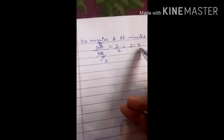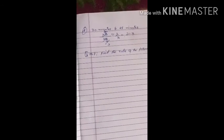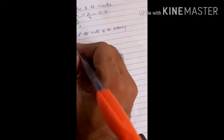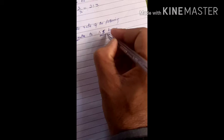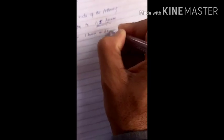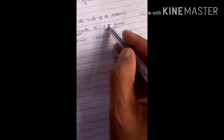After this, question number 7: find the ratio of the following. Question 7 is 30 minutes to 1.5 hours. This is in minutes but the second one is in hours, so we will first convert it to minutes. We know that one hour is equal to 60 minutes.